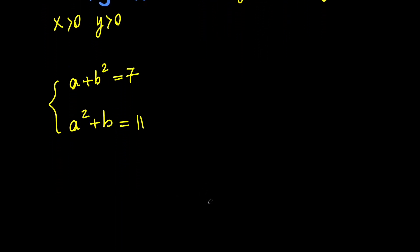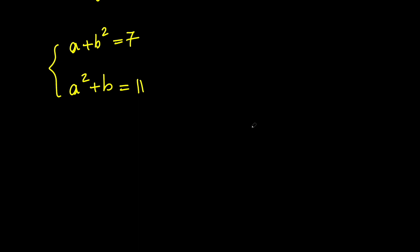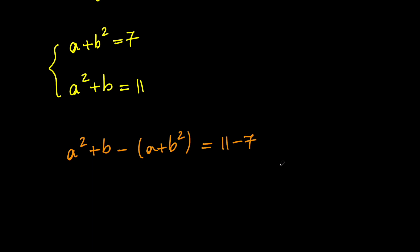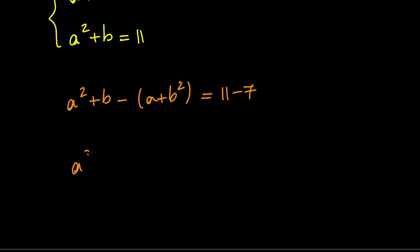Now in order to solve this for a and b, let's go ahead and subtract the first equation from the second one. So we're going to get a squared plus b minus the quantity a plus b squared equals 11 minus 7. We can write the left-hand side as a squared minus b squared plus b minus a, and this equals 4.